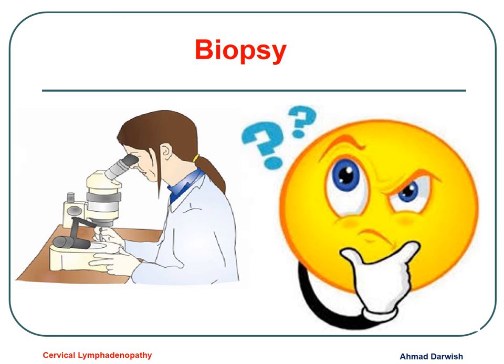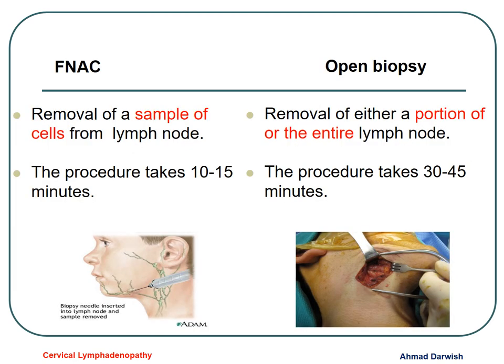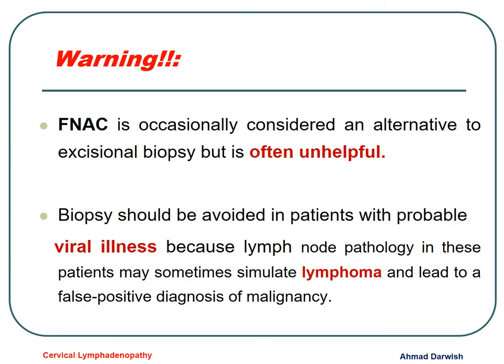Regarding biopsy: there are two main types — fine needle aspiration cytology (FNAC) and open or excisional biopsy. For FNAC, we remove a sample of cells from the lymph node over 10 to 15 minutes. For excisional biopsy, we remove a portion or the entire lymph node, taking about 30 to 45 minutes. FNAC is occasionally an alternative to open biopsy but is usually unhelpful. Biopsy should be avoided in patients with probable viral illness, because lymph node pathology in these patients may simulate lymphoma and lead to a false-positive diagnosis of malignancy.